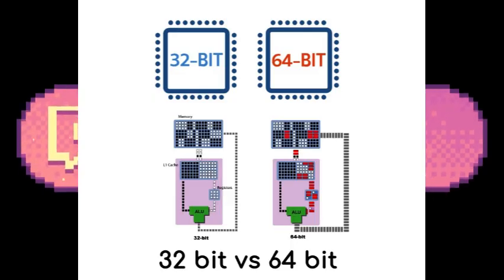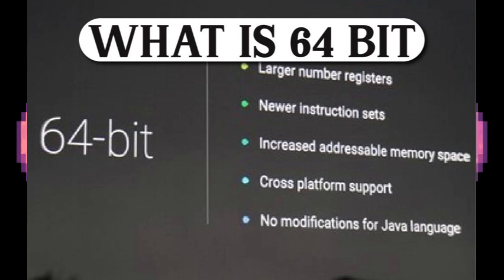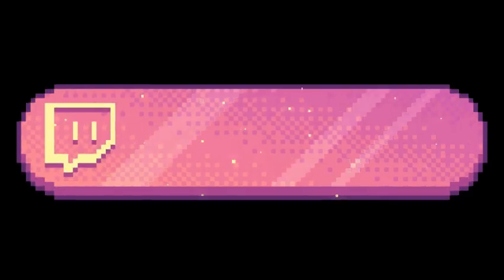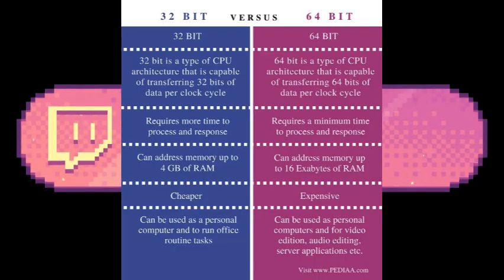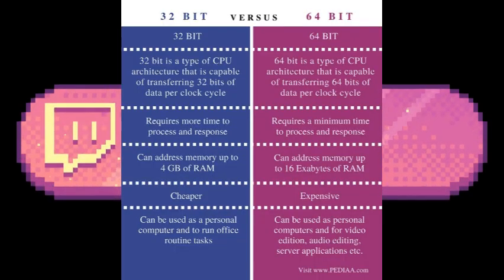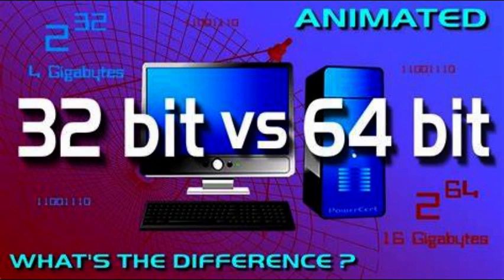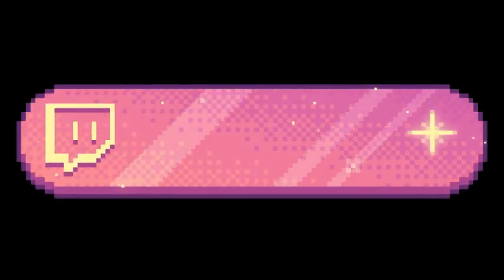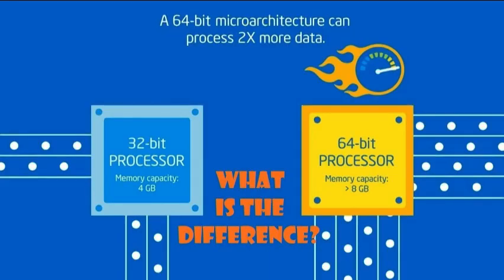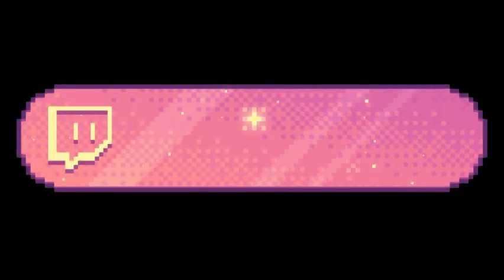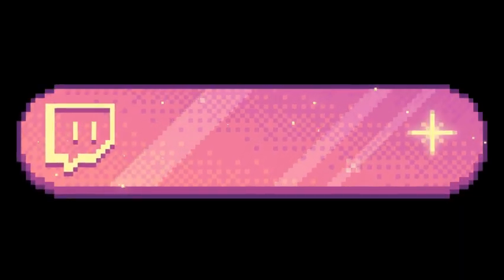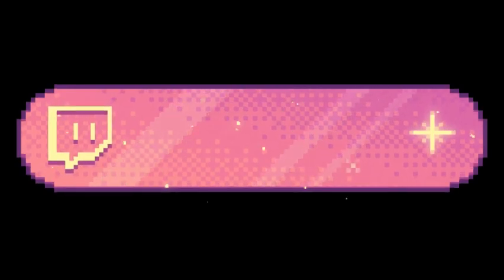Most computers released over the past two decades were built on a 32-bit architecture, hence most operating systems were designed to run on a 32-bit processor. A 64-bit register can theoretically reference 18,446,744,073,709,551,616 bytes, or 17,179,869,184 gigabytes, 16 exabytes of memory. This is several million times more than an average workstation would need to access.